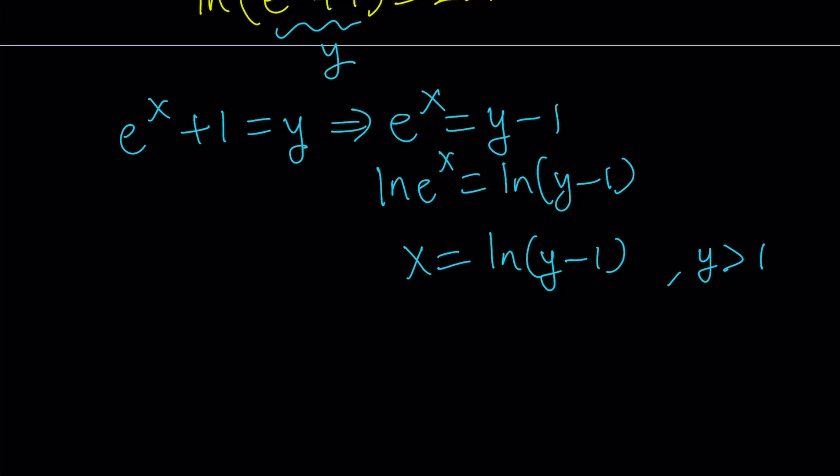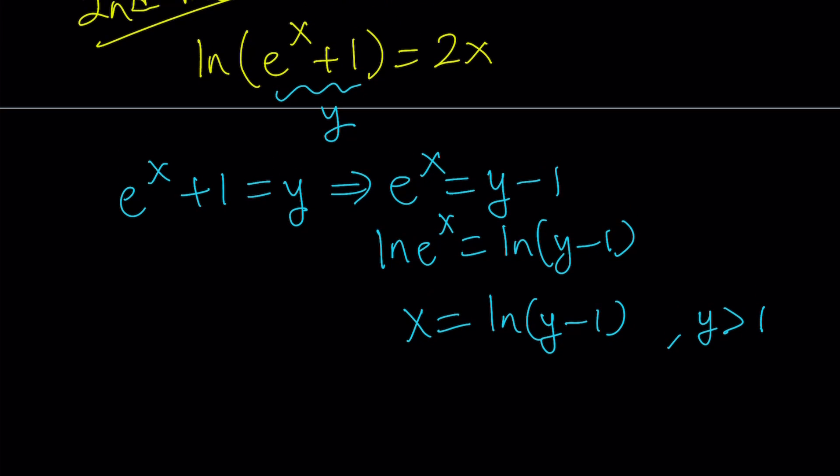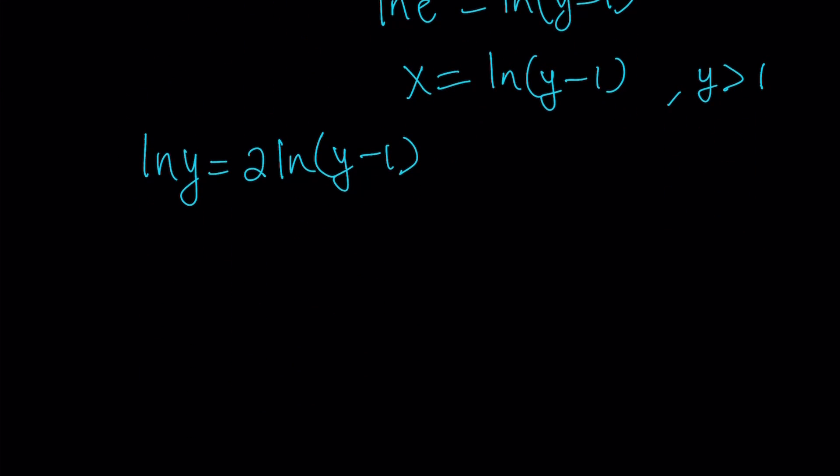So we got the x value, but how do we plug it into our original equation? Notice that we replaced e^x + 1 with y, so that gave us ln(y). And on the right hand side you have 2 times x, which is 2 times ln(y - 1). Now how do you solve such an equation? Like if somebody gave you an equation like ln(y) = 2ln(y - 1), how do you solve it?